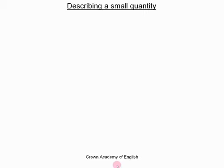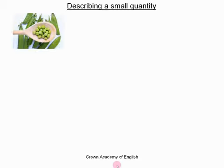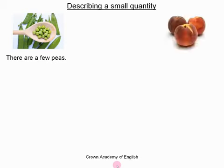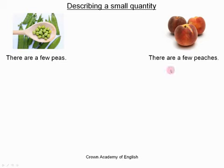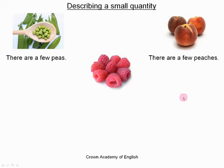Let us look at a situation where we are describing a small quantity of something. There are a few peas. There are a few peaches. And there are a few raspberries.